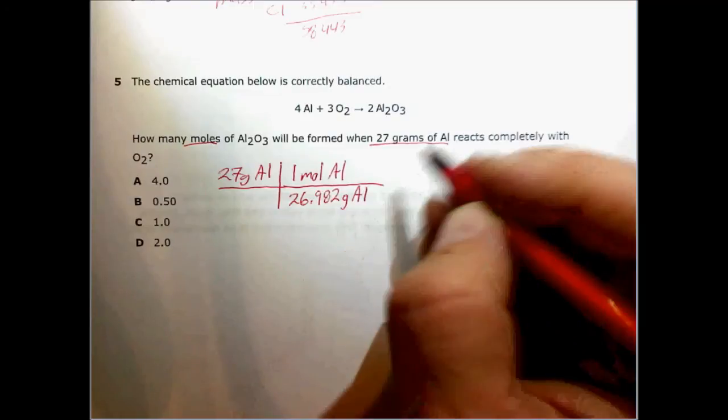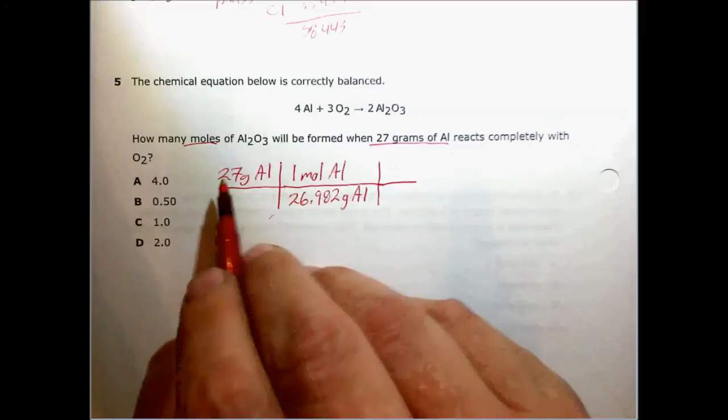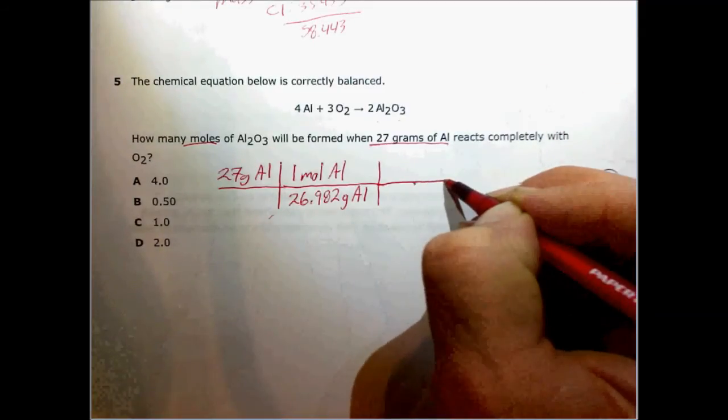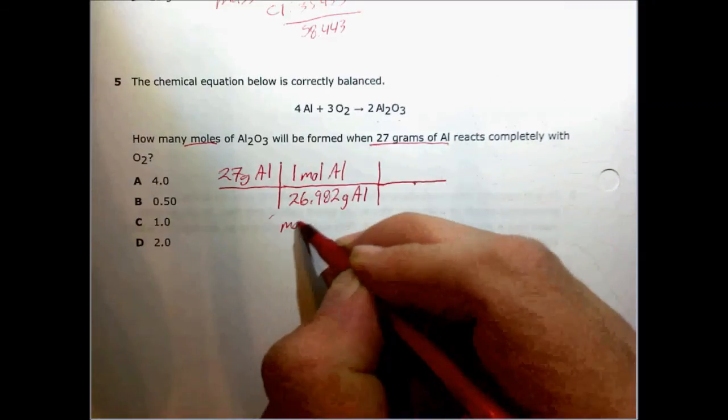That's really close to essentially one mole. Or pardon me, the 27 grams is close to 26.982. Now we need a mole ratio.